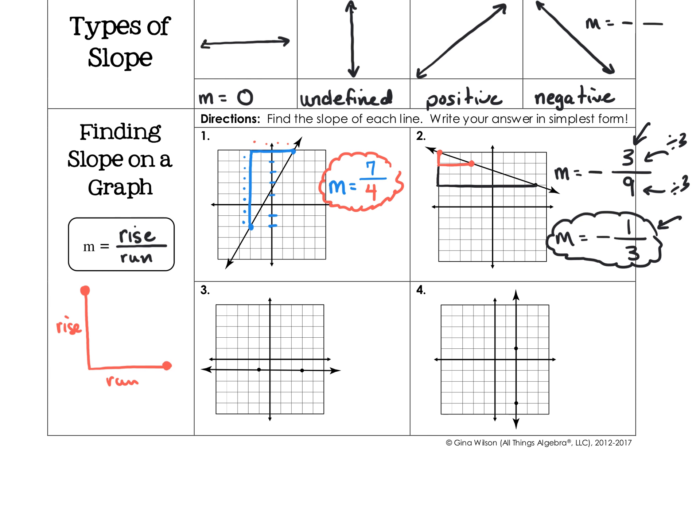You could go down 3 and right 9, or down 1 and right 3, or even down 2 and right 6 — all of these ratios reduce to negative 1/3. Simplest form is the most reduced version of the ratio, and the final answer for example 2 is M equals negative 1/3.